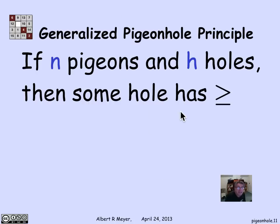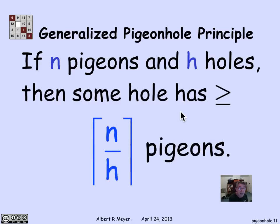More generally, if I have n pigeons and I'm going to be assigning pigeons to unique holes, and if I have h holes, then some hole has to have n divided by h rounded up. Again, n divided by h can be understood as the average number of pigeons per hole. And the pigeonhole principle can be formulated as saying at least one hole has to have greater than or equal to the average number. And that is the generalized pigeonhole principle.